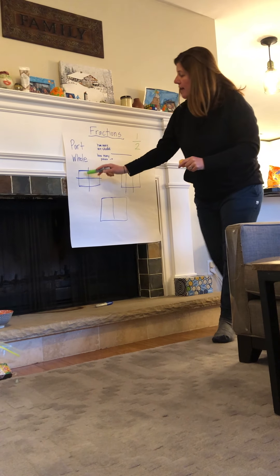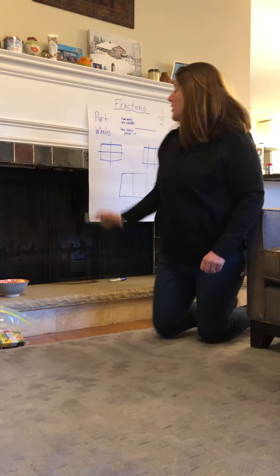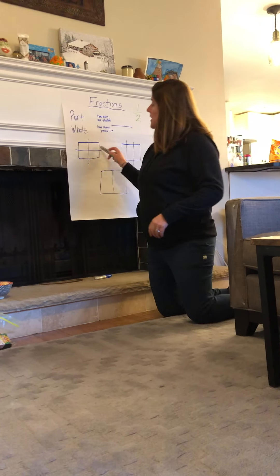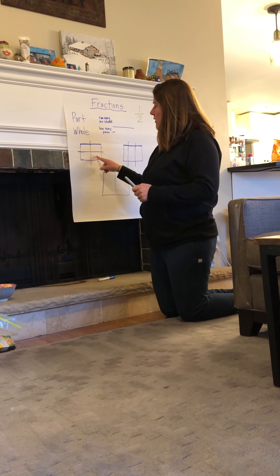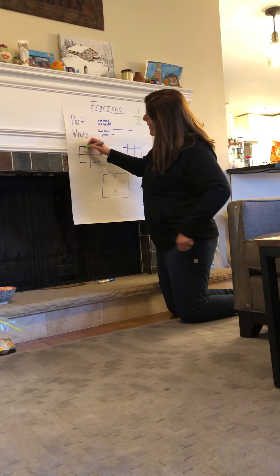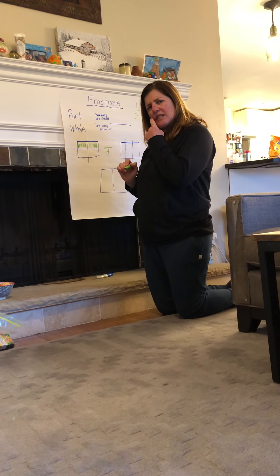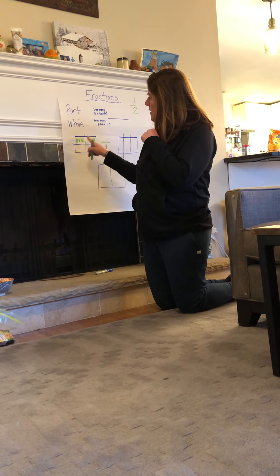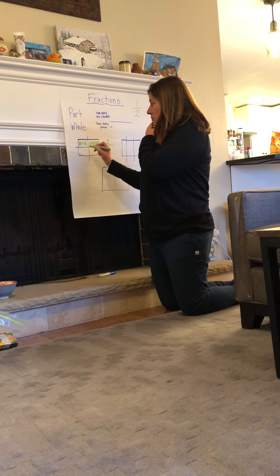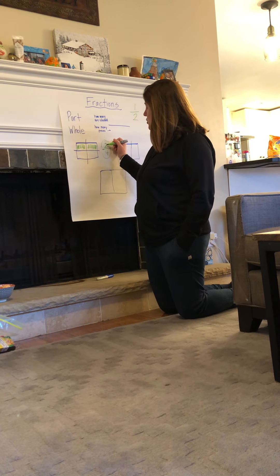Down here I have pictures of rectangles, and we're going to talk about different fractional parts of these. The whole entire rectangle here is one whole, but I've broken this one into one, two, three, four pieces. So the bottom number of my fraction will be four. And if I shade in that piece, and I shade in that piece — how many pieces did I shade in? One, two. So I shaded in two out of one, two, three, four pieces altogether.